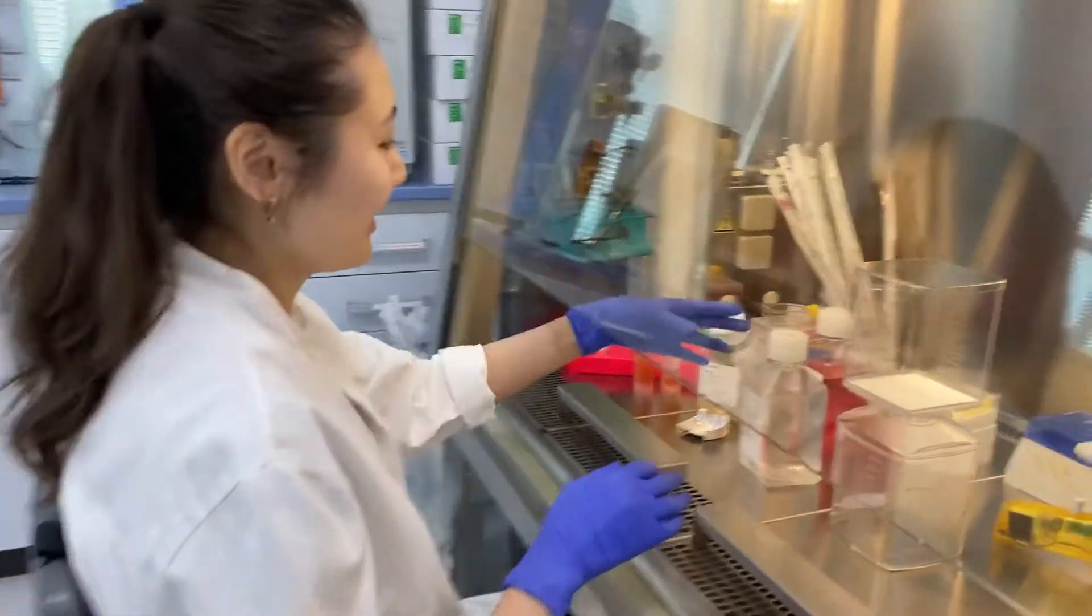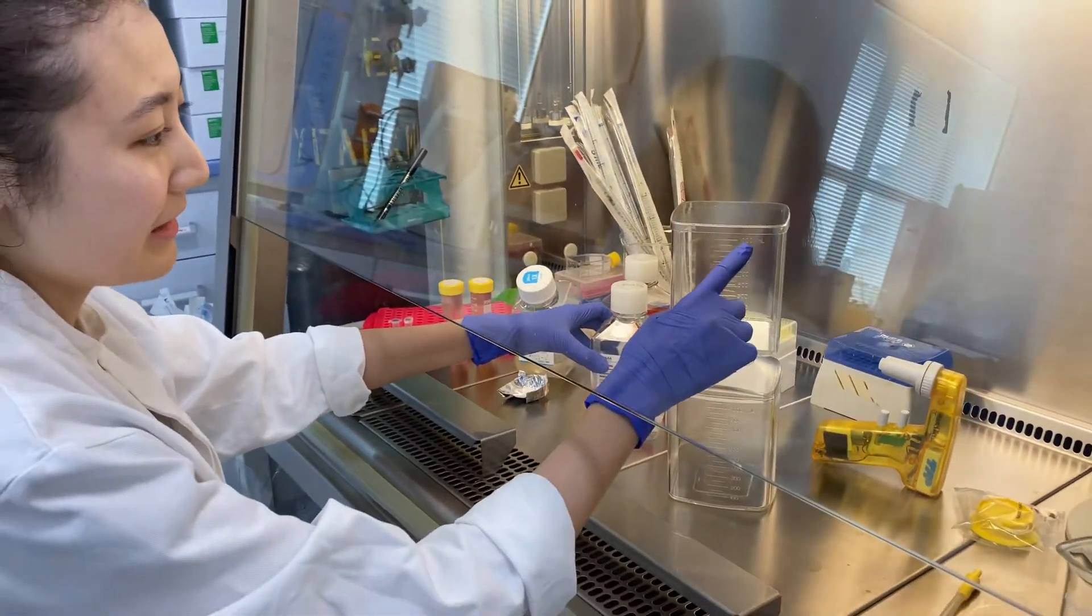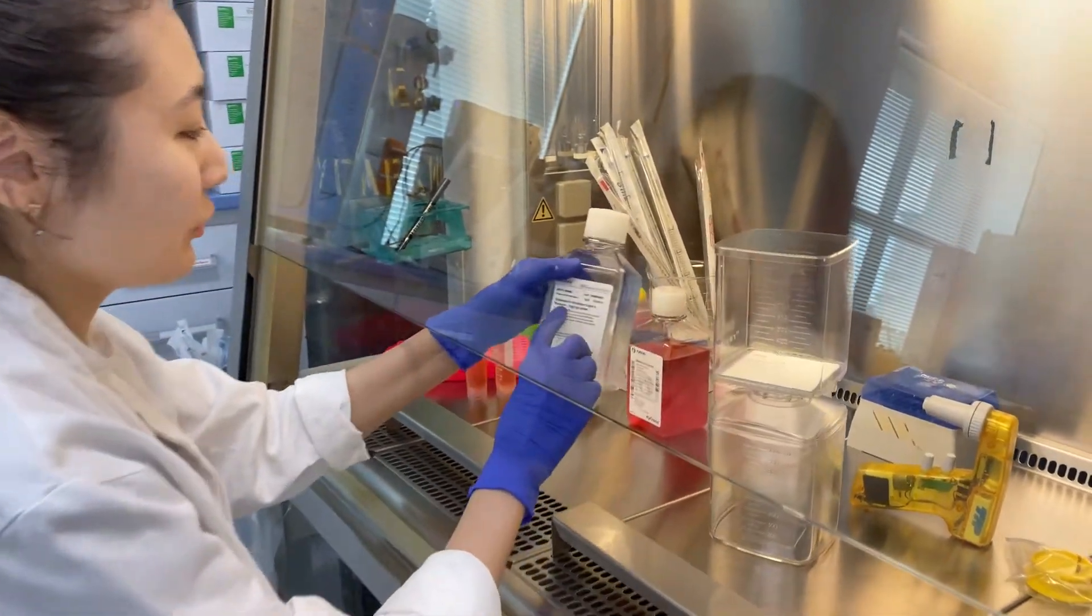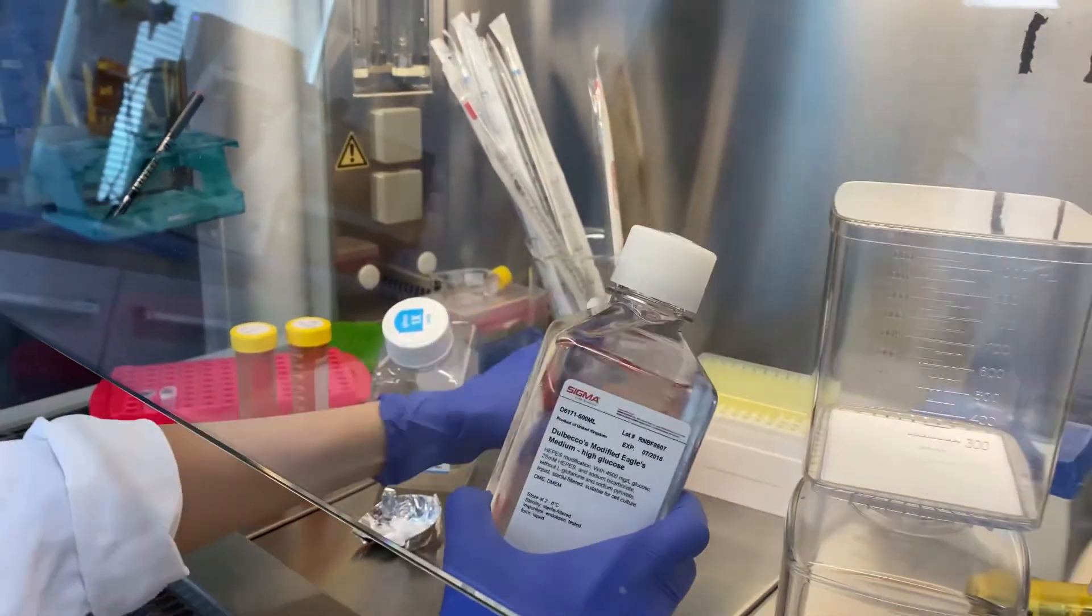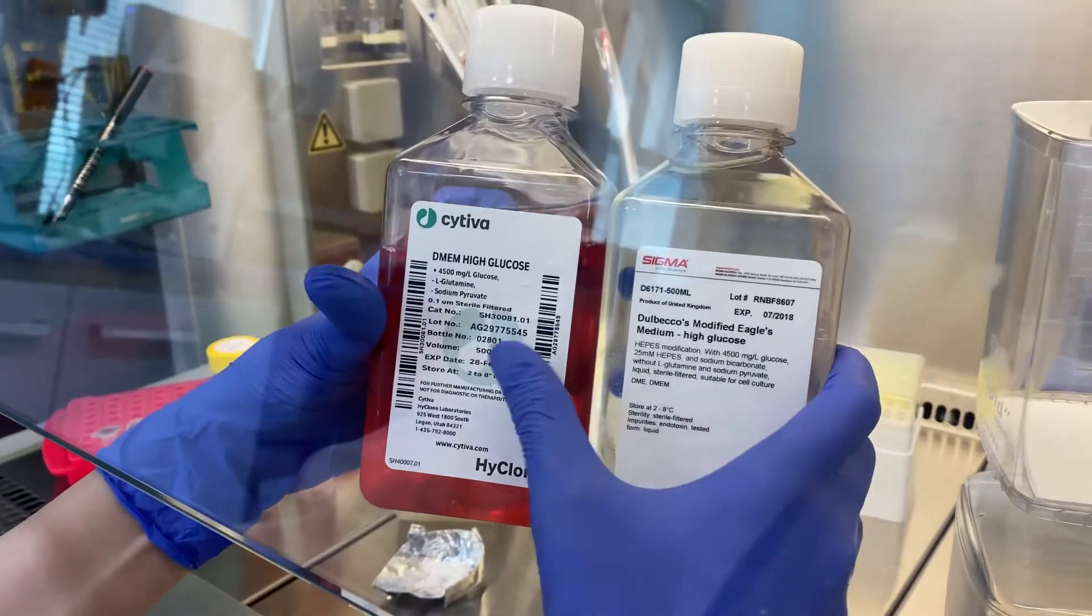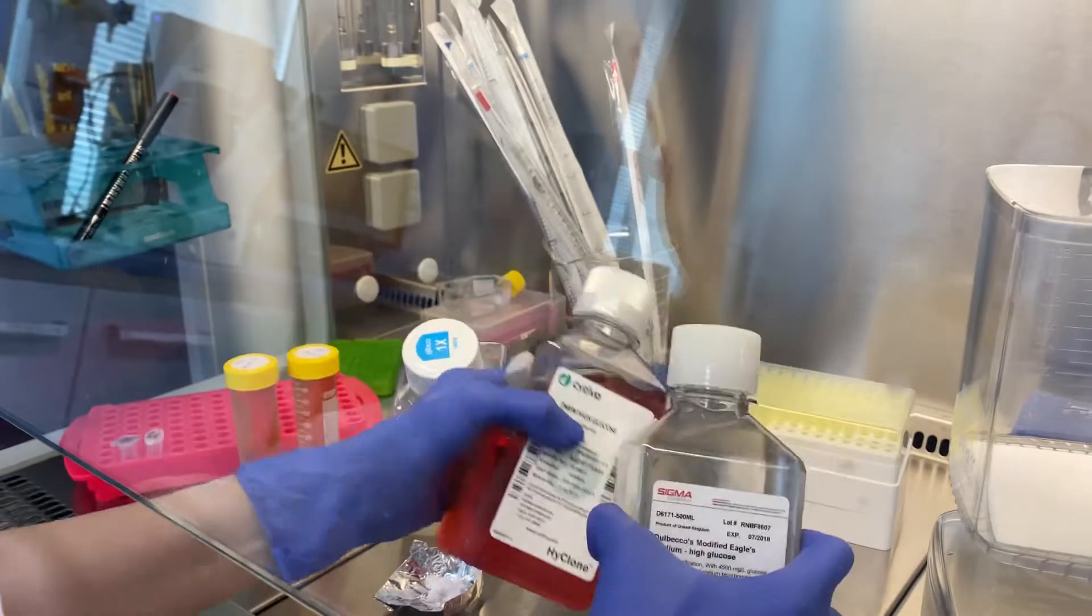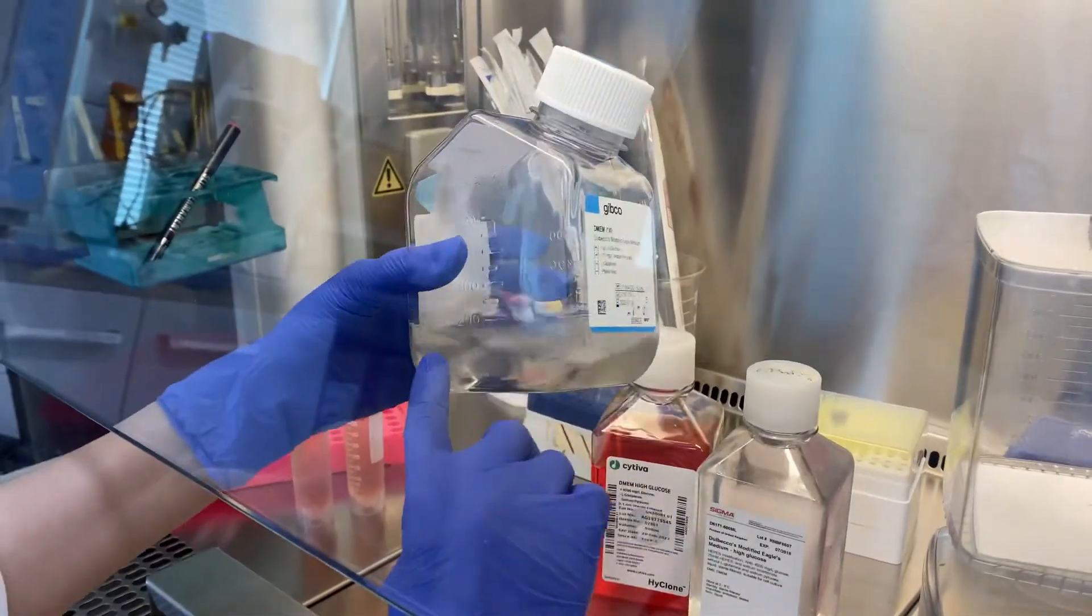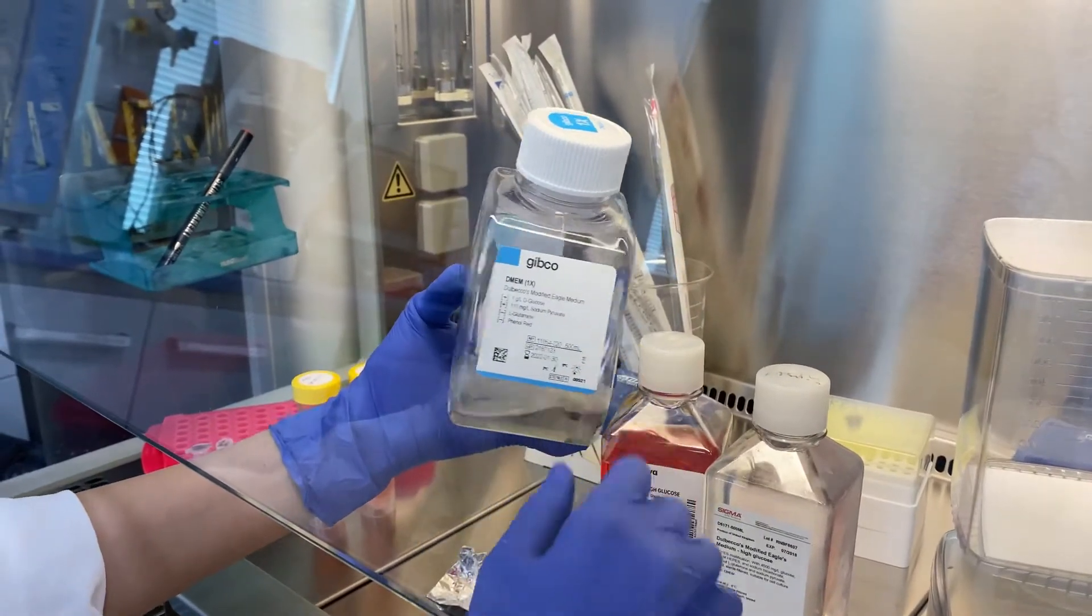First of all, we will make 1000ml of DMEM. We need Dulbecco's Modified Eagle's Medium High Glucose like this. These things are absolutely the same but from different companies. So I will use this one. Also I have a little bit of this DMEM, Dulbecco's Modified Eagle's Medium.